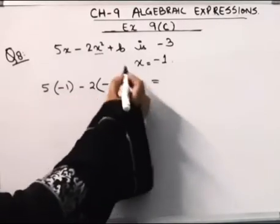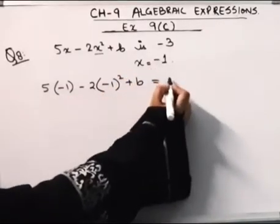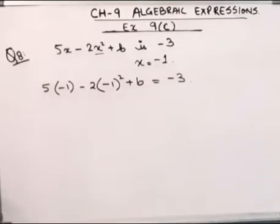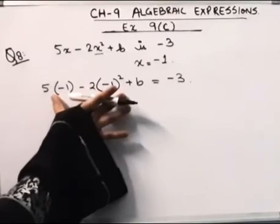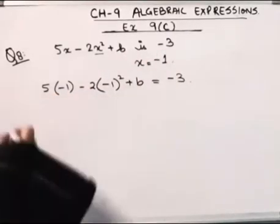This expression's value will be -3 if I put x equal to -1. This is given in the question—this expression's value equals -3.